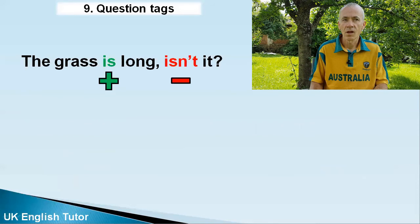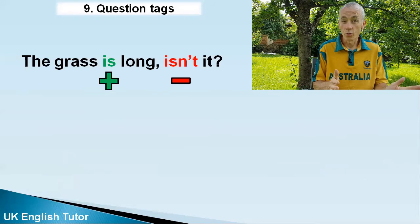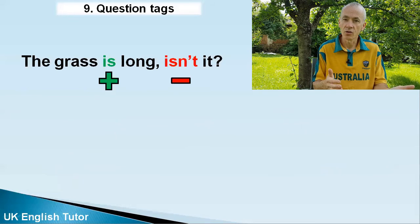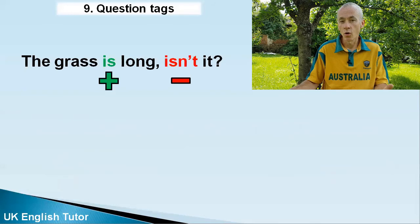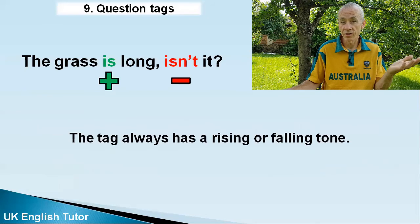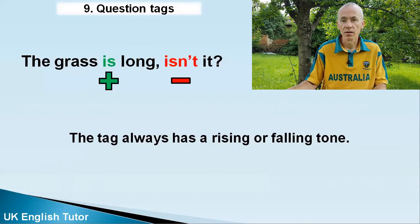Wait, there's another rule I forgot to use. The first two rules are about grammar — positive/negative and using the correct form of the verb — but there's also a rule about pronunciation. With tag questions there's always either a rising or falling intonation. We never say them with a flat tone like a robot.